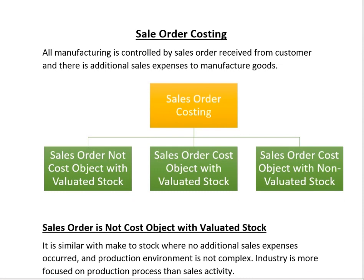In today's class we are going to start a new topic which is Make to Order. In the previous sessions we discussed Make to Stock scenarios, which are further divided into two parts: one is Product Cost by Period and the second one is Product Cost by Order. Now we are going to start a new topic which is Sale Order Costing or Make to Order.